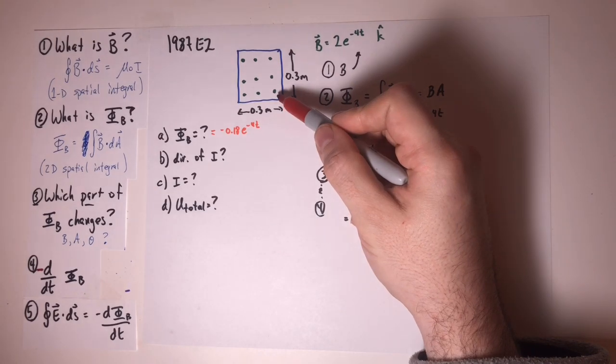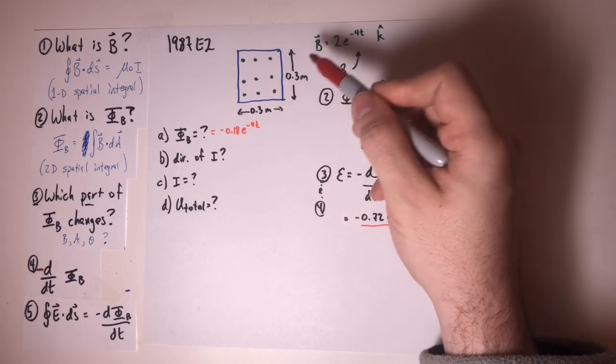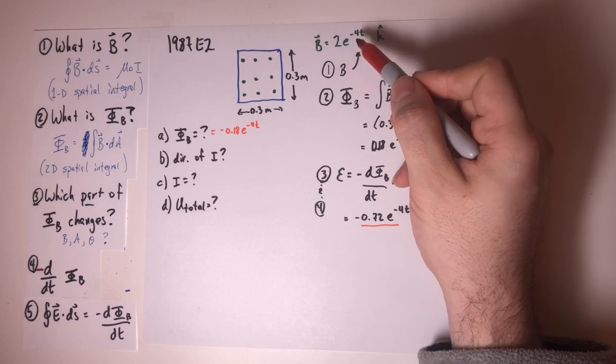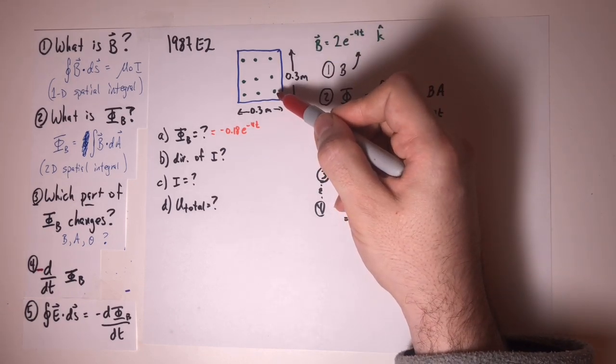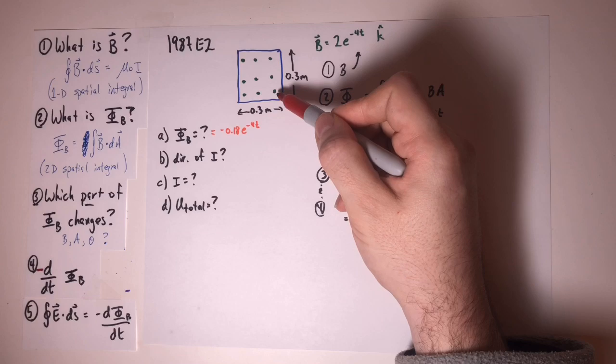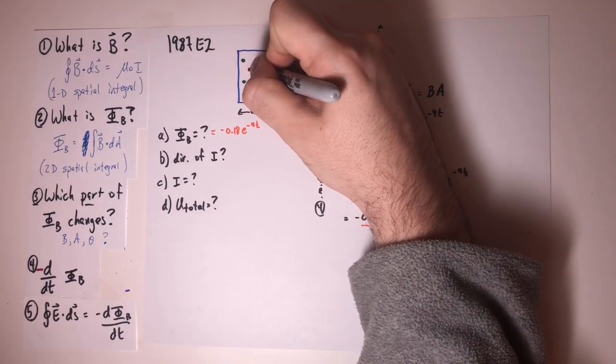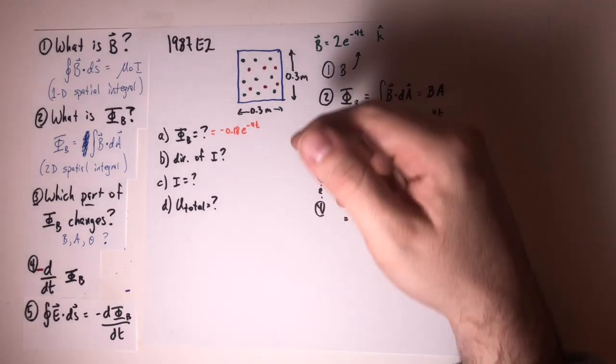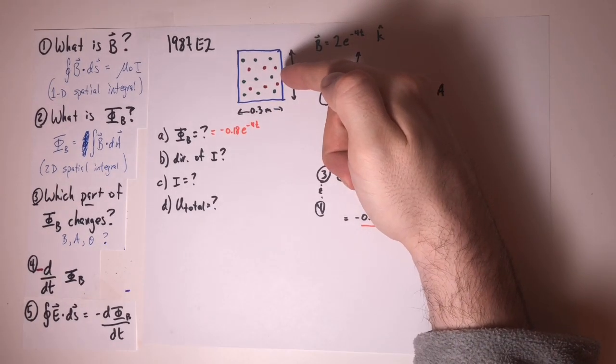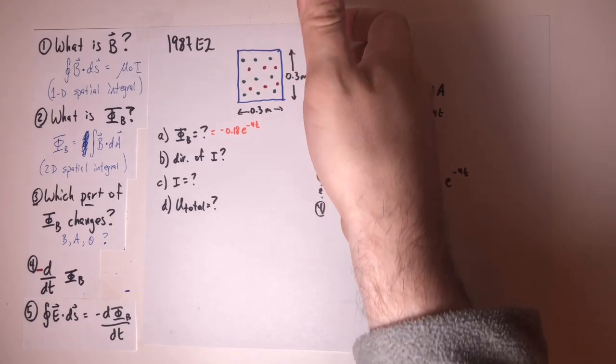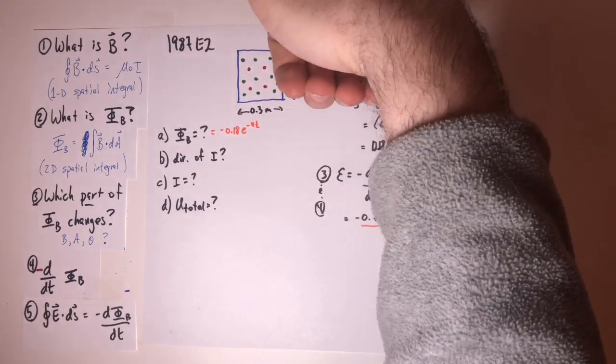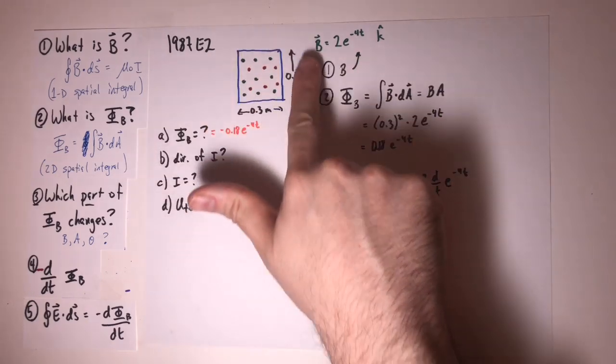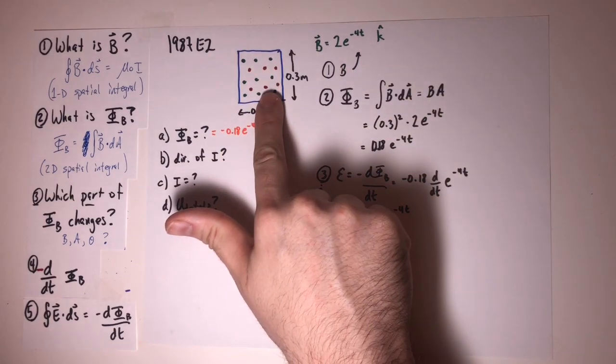In this case, we have a field that points out of the page. However, the magnitude of that field is decreasing over time. So the induced current in the loop is going to try to restore that initial field. So you could use right-hand rule for wires and just look at each wire segment and figure out that the wire has to be carrying current in the counterclockwise direction in order for these field lines to be out of the page.